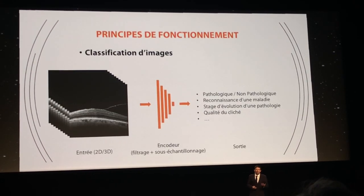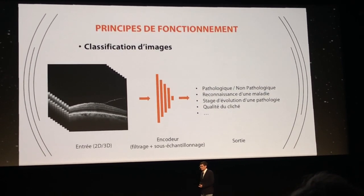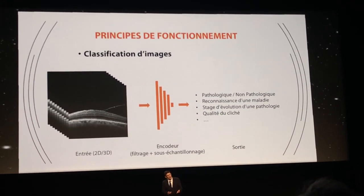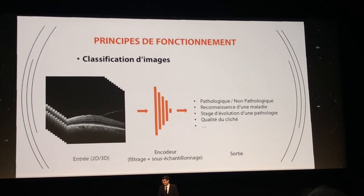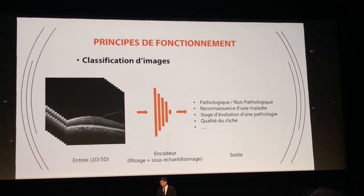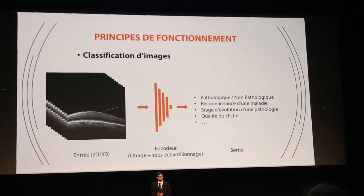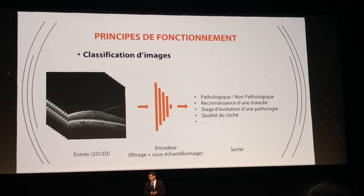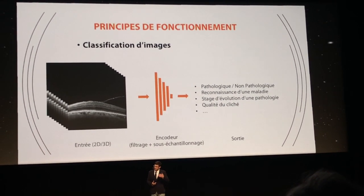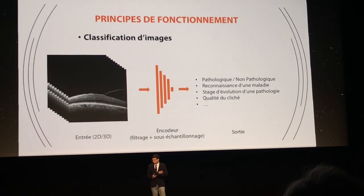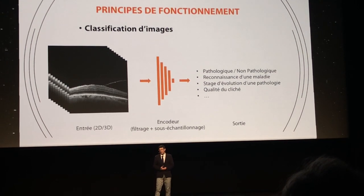There are several types of artificial intelligence. One of the first applications is image classification. How does it work? We feed an image or a volume of OCT images into our artificial intelligence, and to classify these images, we use an encoder — a series of filtering and downsampling steps. In output, we obtain very high-level features, such as: is my OCT volume pathological or non-pathological? Or what type of pathology is present, like AMD for example? Or what is the stage of progression of this AMD? Or is this image interpretable?